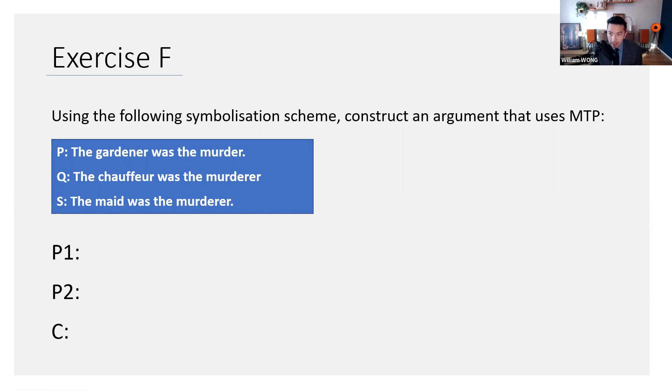Okay, so here's the last exercise for the day. I'll change it up a bit. Use the following symbolization scheme to construct an argument that uses MTP. Yeah, you can have as many premises as you want, but you can have only one conclusion. So here's the symbolization scheme. I'll give you, you know, 30 seconds. If you're done, maybe write me the answer. Say what P1 is, what P2 is and what C is. You can get creative if you like. Does anybody have anything for me?